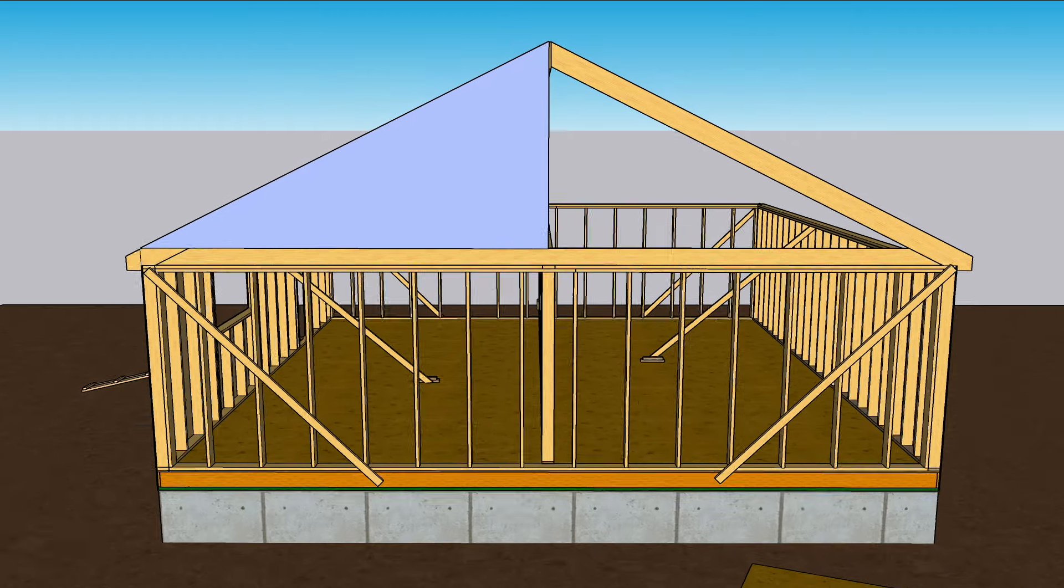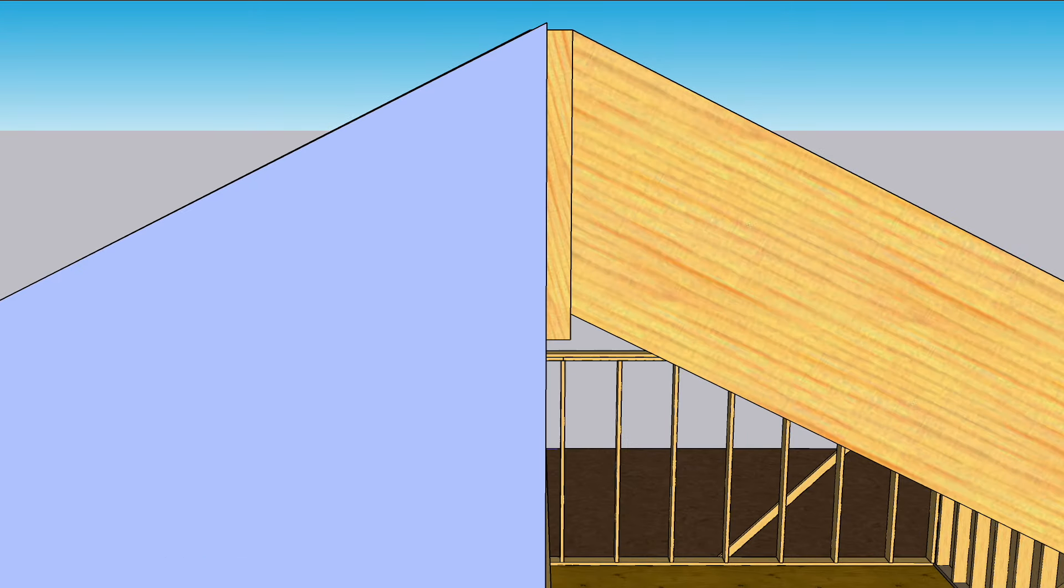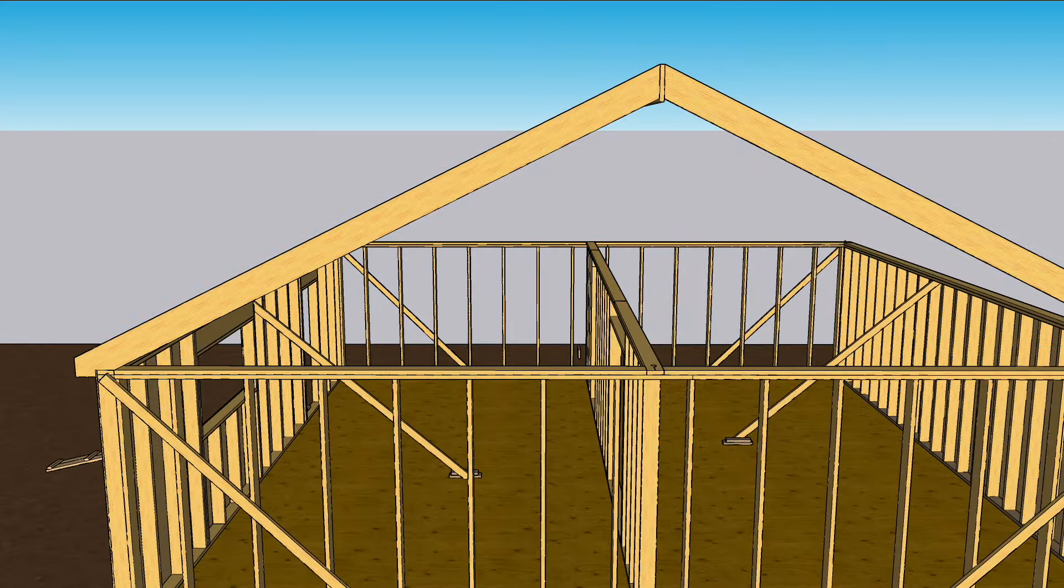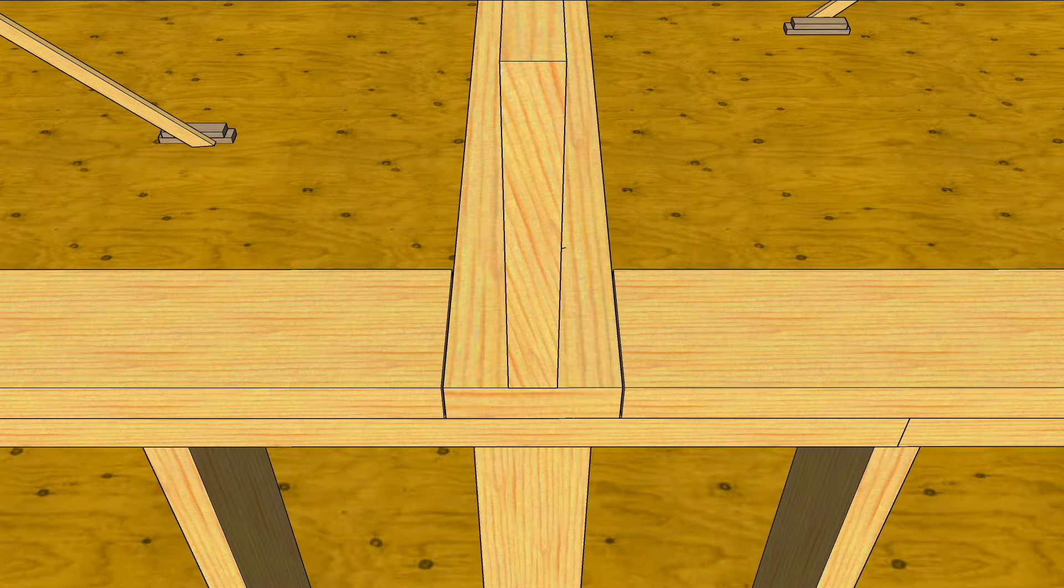If there were no ridge, the run would be half the width of the building from the center to the outside wall. In reality, you need to subtract half the width of whatever the ridge is from that measurement. So after marking the center line, also mark each edge of the ridge.